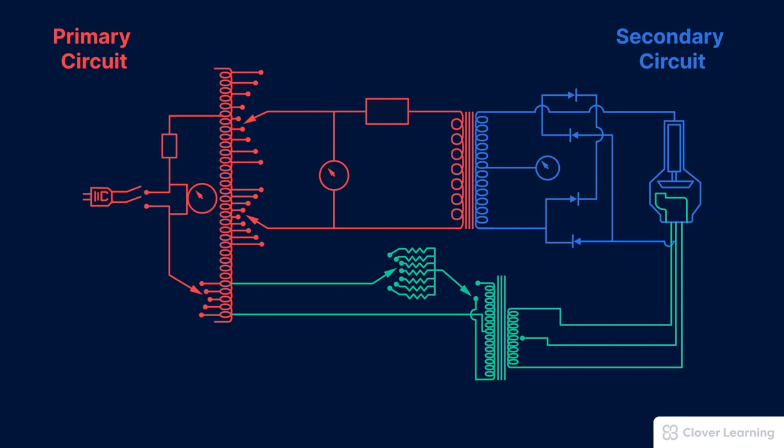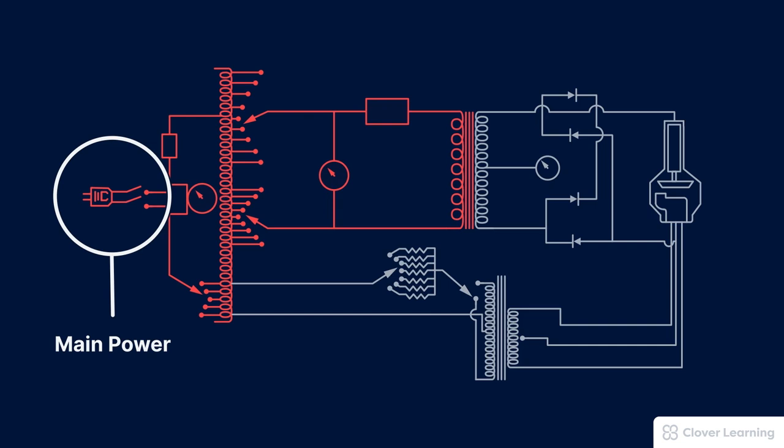Each of these circuits supports the process of x-ray production in different ways, and this lesson is about the primary circuit. We call this the primary circuit because this is where the main power supply comes into the x-ray machine. Another reason we call this the primary circuit is because it's on the primary side of the step-up transformer.